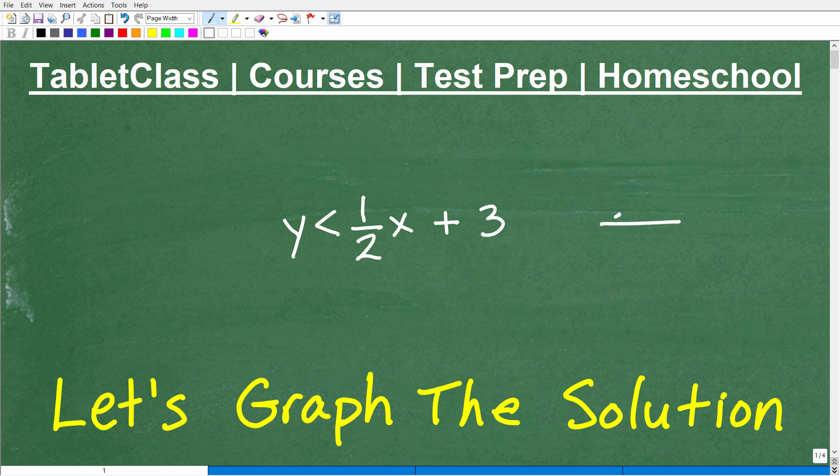Okay, so what do we have here? Well, we have y, and then this symbol here is less than. So it's an inequality. We have y is less than 1 half x plus 3, and we want to graph the solution.